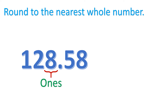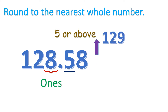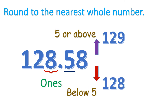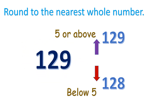And whenever we round up a number, we always look at the number at the right. And in this place, if it's 5 or above, then we are going to round up. And if it's below 5, then we are going to round down or retain. So since it's 5, then we are going to round up to 129.